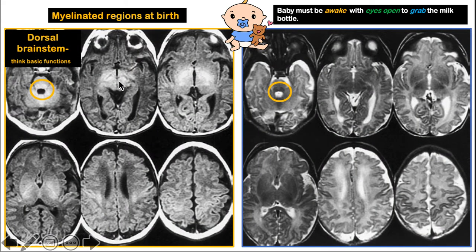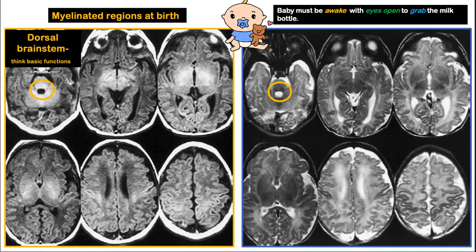Here are a set of T1 weighted and T2 weighted images in a newborn. To associate the dorsal brainstem region, we think about basic functions the brainstem allows. The baby must be awake, which corresponds to the reticular formation in the brainstem — so the dorsal brainstem is hyperintense on T1 and hypointense on T2.